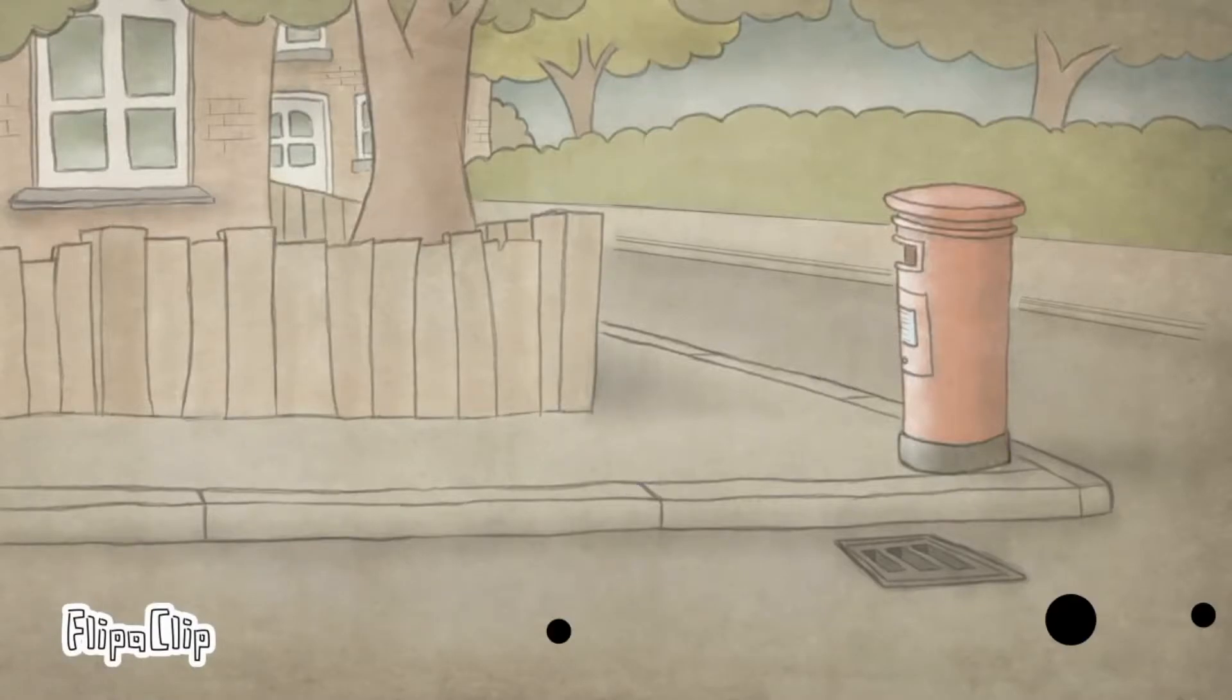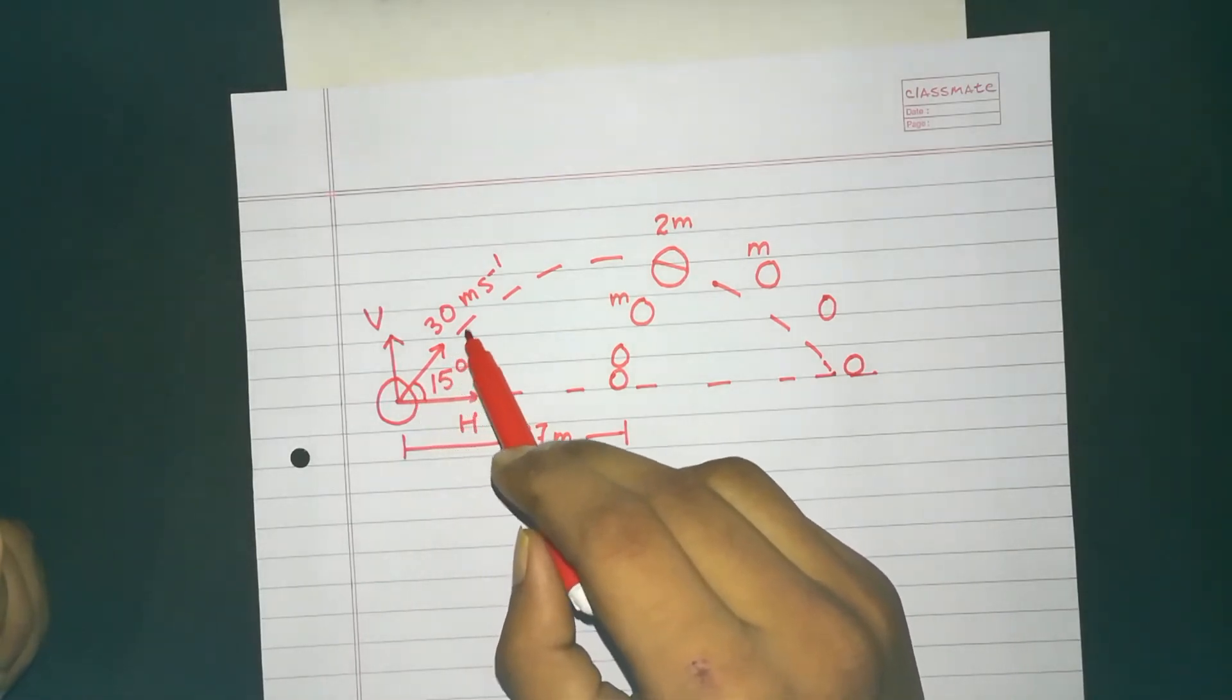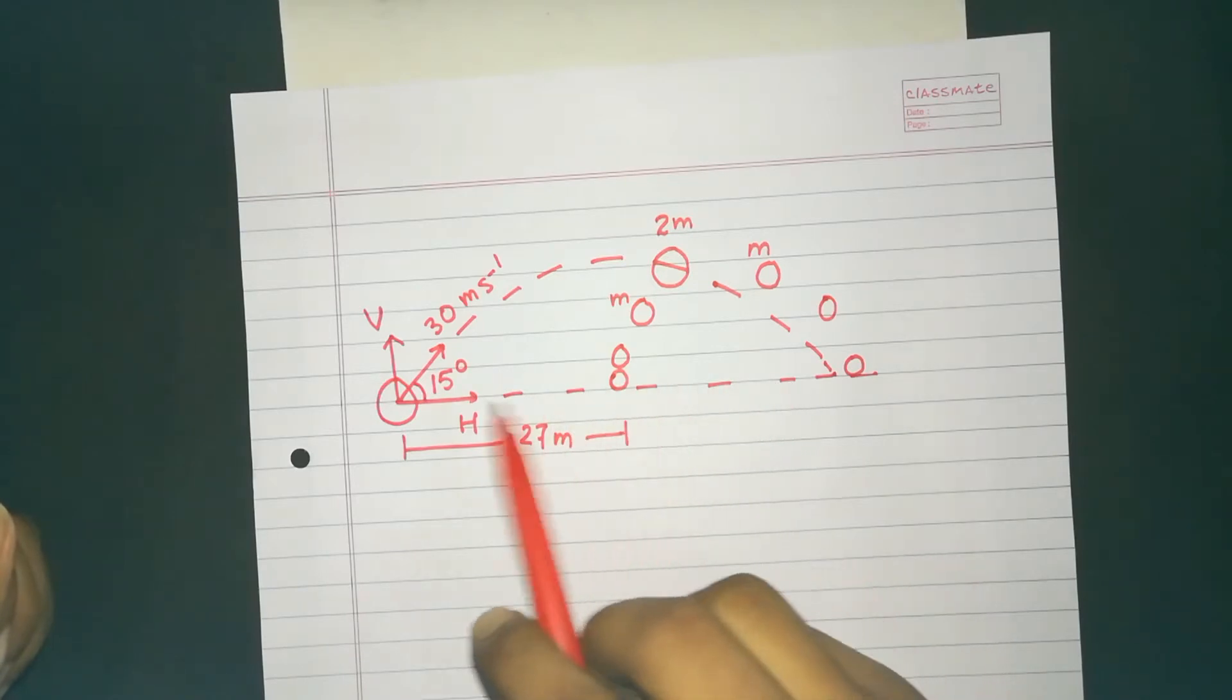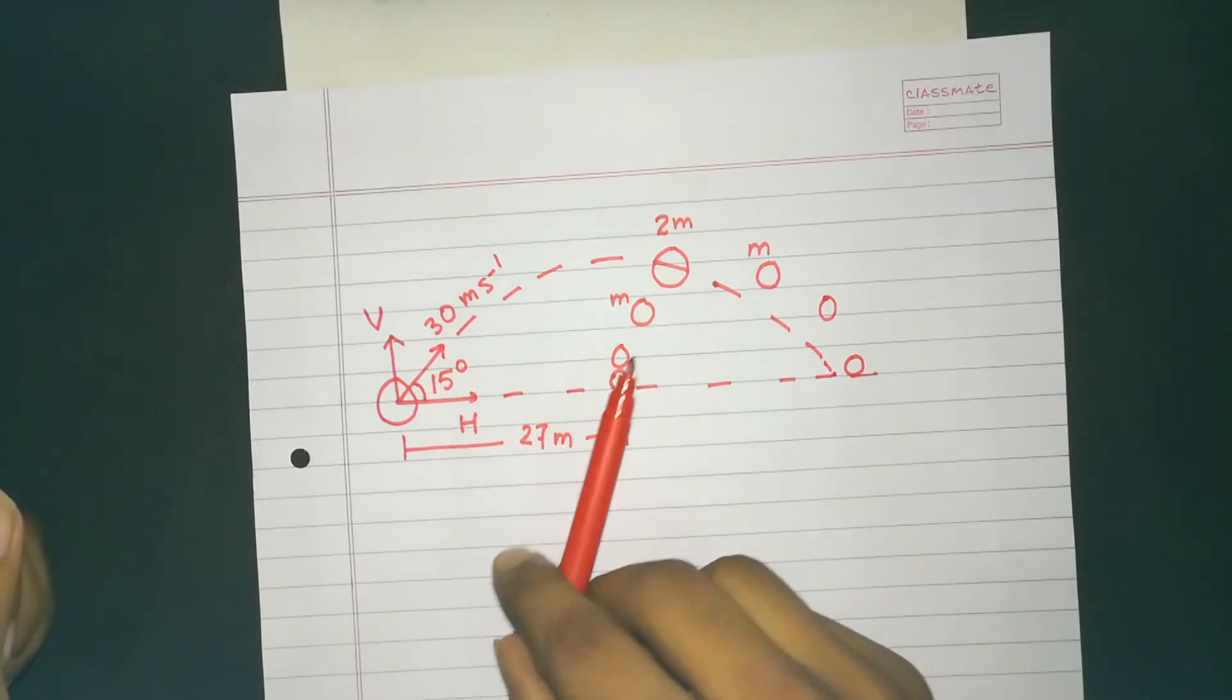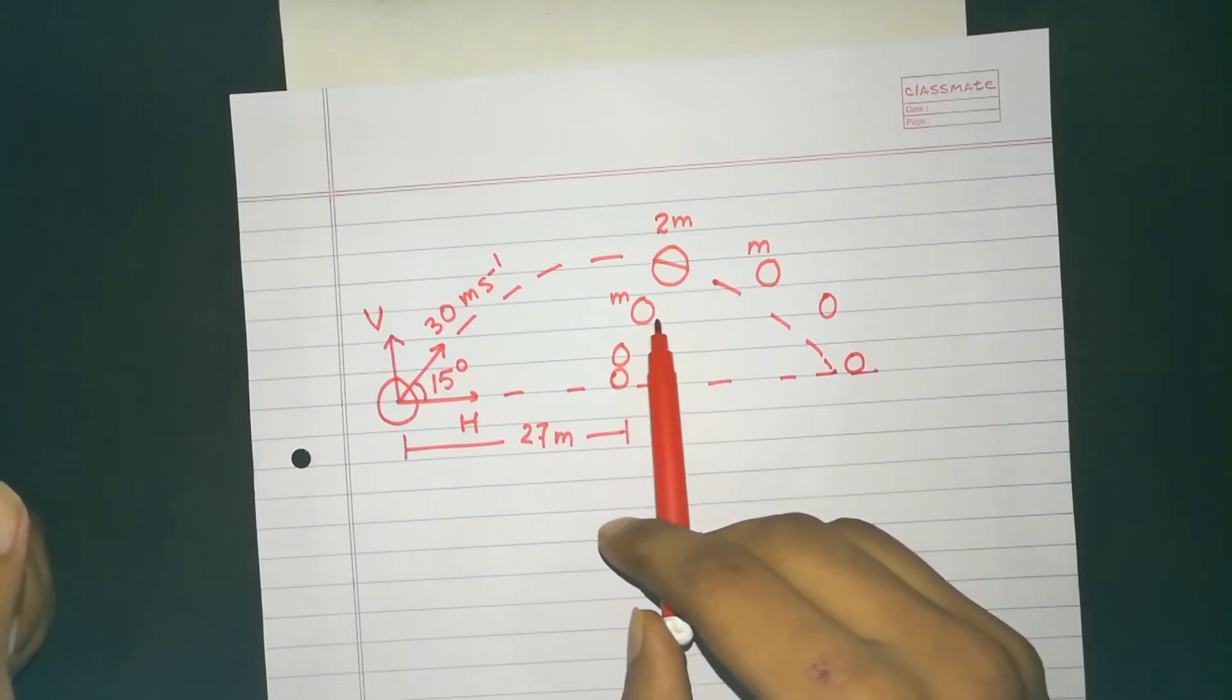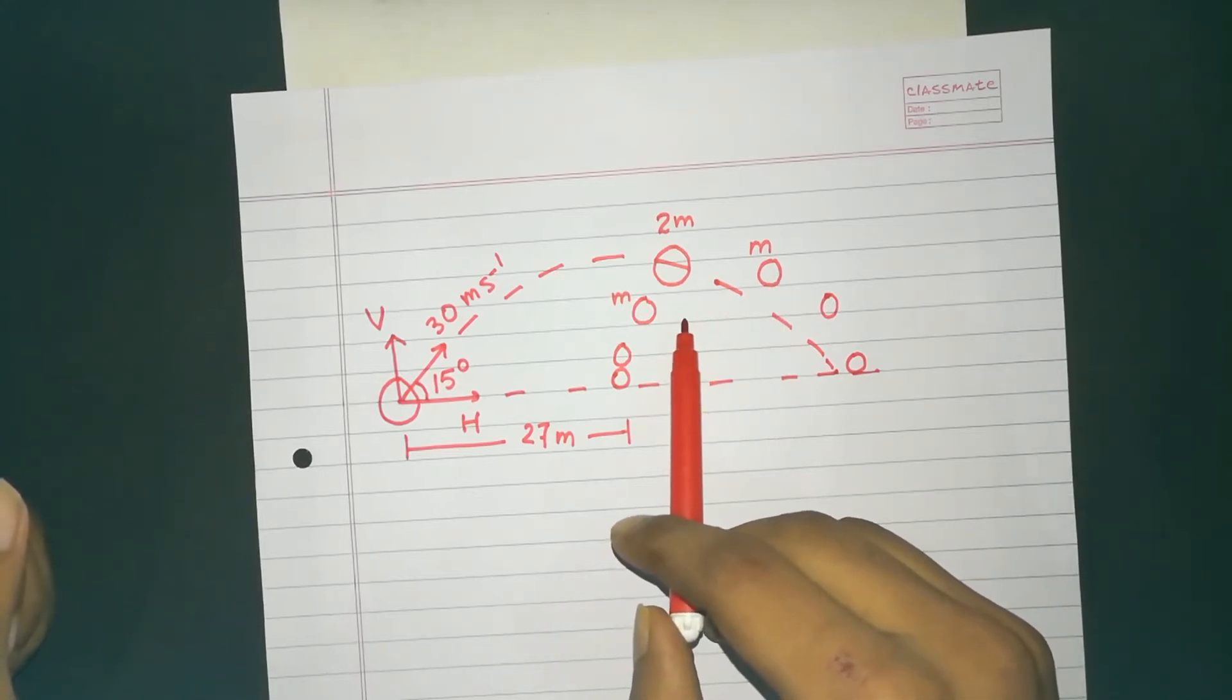The projectile follows a parabolic path. What the question says is that the cracker is traveling with 30 meters per second, making an angle of 15 degrees with the horizontal. It must travel in a parabolic path just as any other projectile will travel. But there's a twist in the question. Somewhere in the air, the cracker is just exploding and that's why it's breaking down into two identical parts.